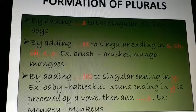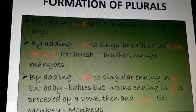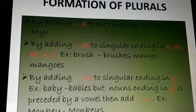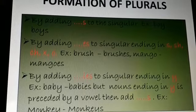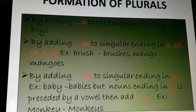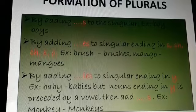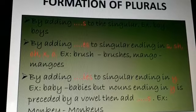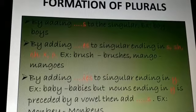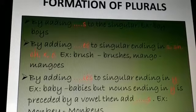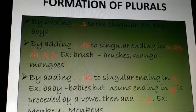Next one, by adding es to the singular ending in s, sh, ch, x or o. So where the nouns are ending in all these alphabets, whichever I have mentioned, these nouns are formed into plurals by adding es. Example is brush, brushes, mango, mangoes, tax, taxes, etc.